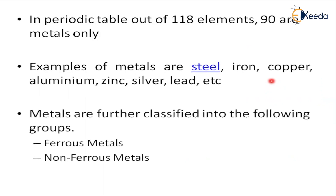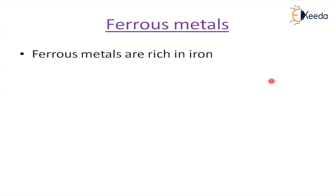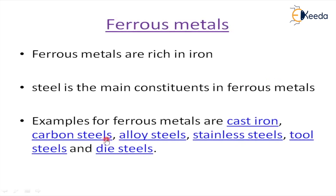Let us discuss what is meant by ferrous and non-ferrous metals. Ferrous metals are rich in iron — the iron composition is very important and has the maximum percentage in ferrous metals. Steel is the main constituent in ferrous metals. Various examples of ferrous metals are cast iron, carbon steels, alloy steels, stainless steels, tool steels, and die steels.